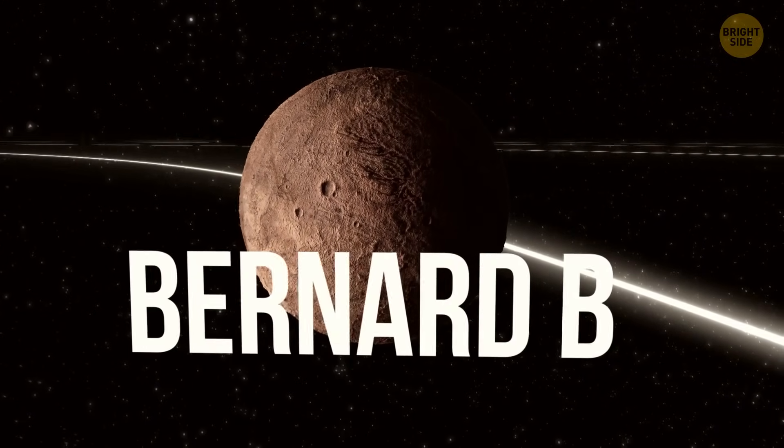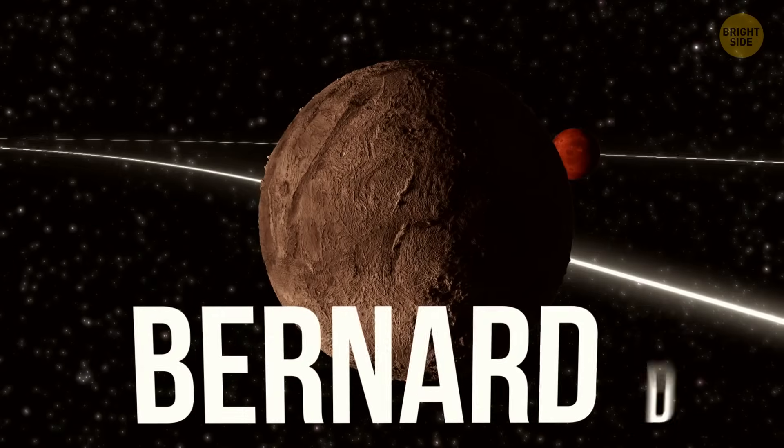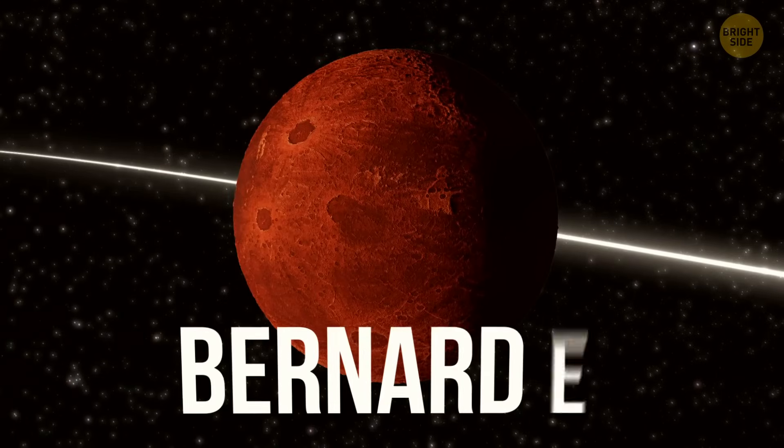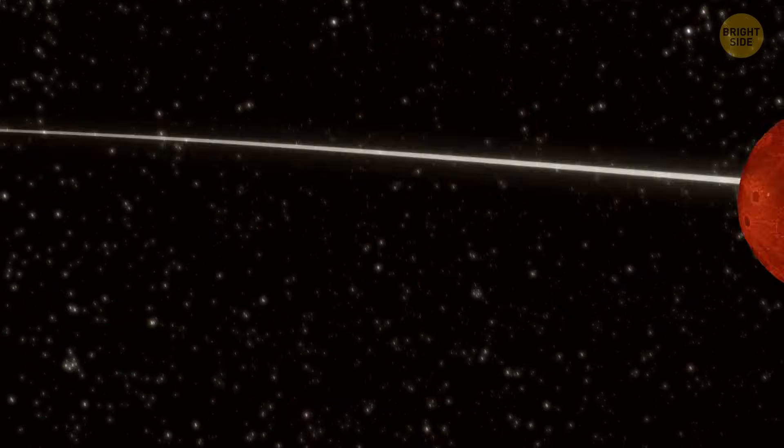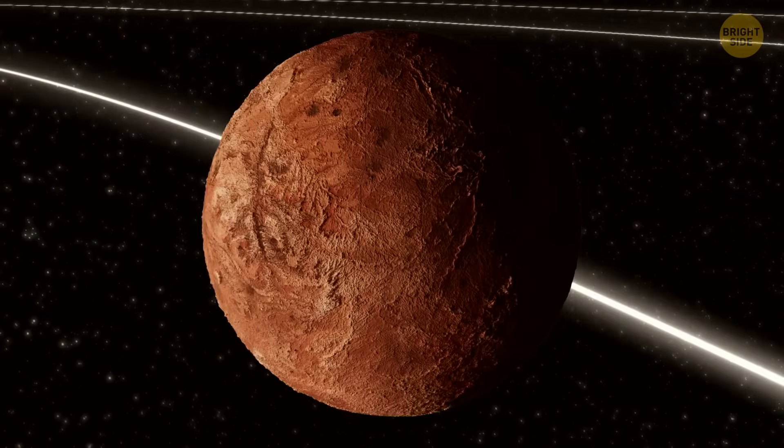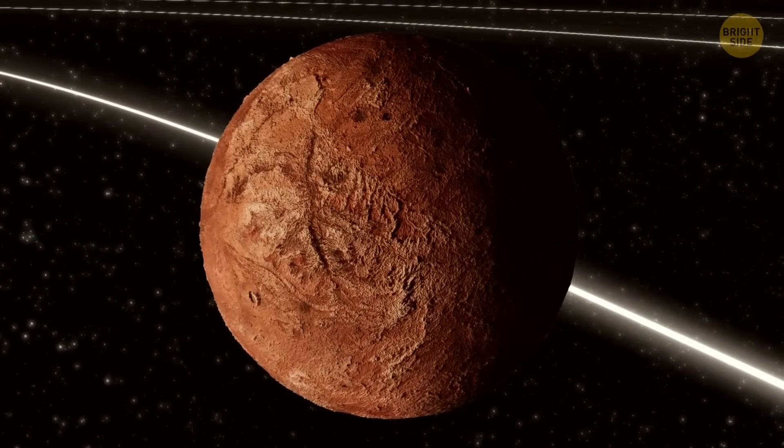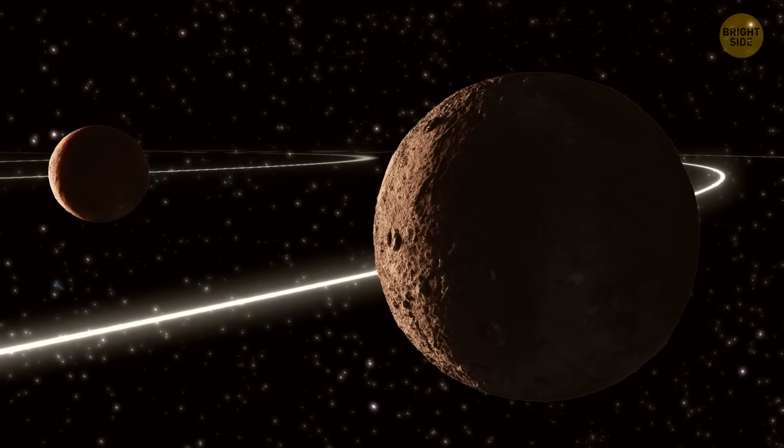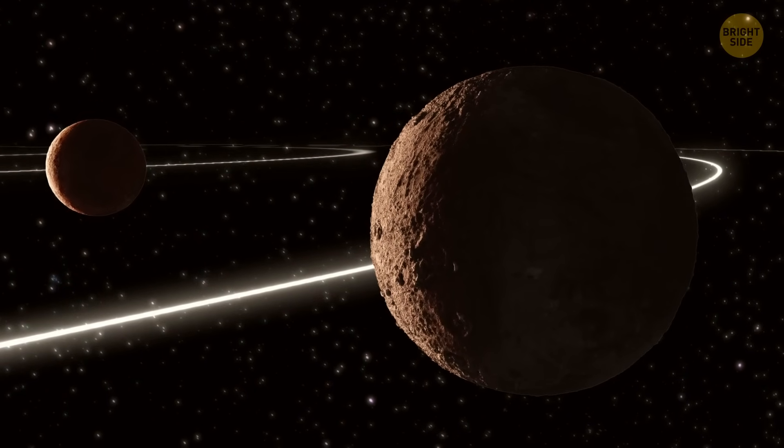The planets are called Barnard B, C, D, and E. How creative, huh? The innermost has a mass of 26% of Earth. The second one is a bit bigger, with a mass of 30% of Earth. The third one has 4% more mass than the previous.